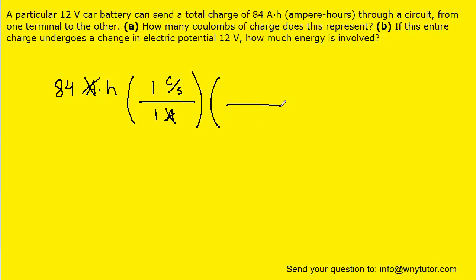In addition, we know that one hour is equal to 3600 seconds. And by setting up this conversion, we can see that the hours in the numerator will cancel with the hours in the denominator.